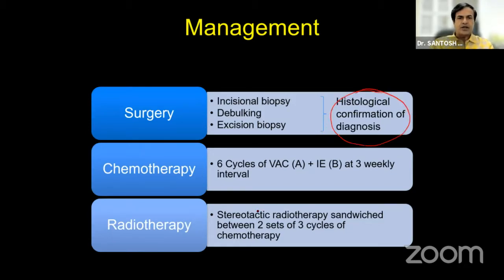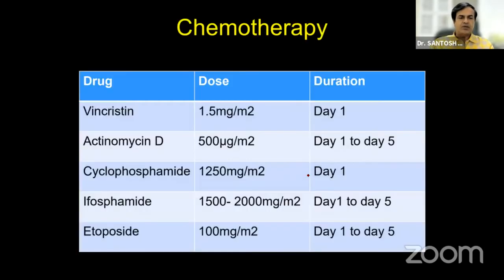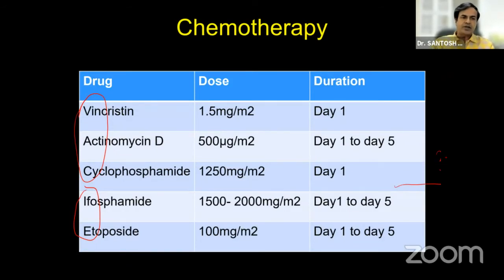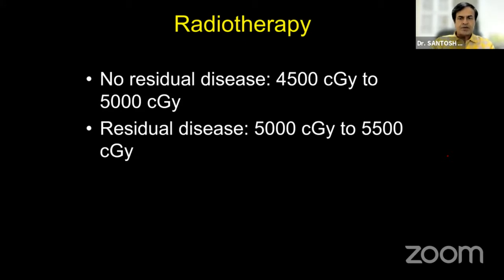After histopathological confirmation we start chemotherapy — a combination of VAC plus IE alternating 3-weekly, followed by radiation. After 3 cycles of chemotherapy we provide radiation and then 3 more cycles of chemotherapy. The drugs are vincristine, actinomycin D, and cyclophosphamide as one set, and ifosfamide and etoposide as the other set, alternating 3-weekly. External beam radiation is then given — if there is no residual disease the dose is 4,500 to 5,000 cGy; if there is residual disease it is 5,000 to 5,500 cGy. Radiation is given to the entire pretreatment extent of the tumor, not to the post-chemotherapy residual.